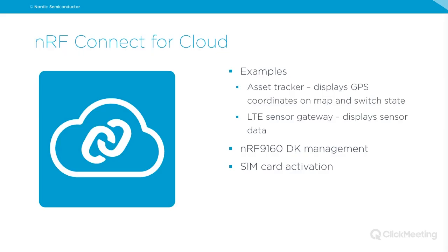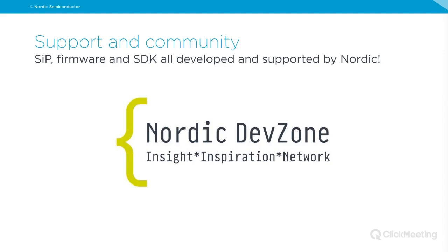NRF Connect for Cloud works together with the examples: the asset tracker displays GPS coordinates on a map and switch state, while the LTE sensor gateway displays sensor data. It also allows you to manage your NRF9160 DK — device onboarding, SIM card activation, and checking remaining data on the SIM card. The complete solution — system package, modem firmware, SDK, and all tools — is developed by Nordic, meaning we can support you every step of the way.